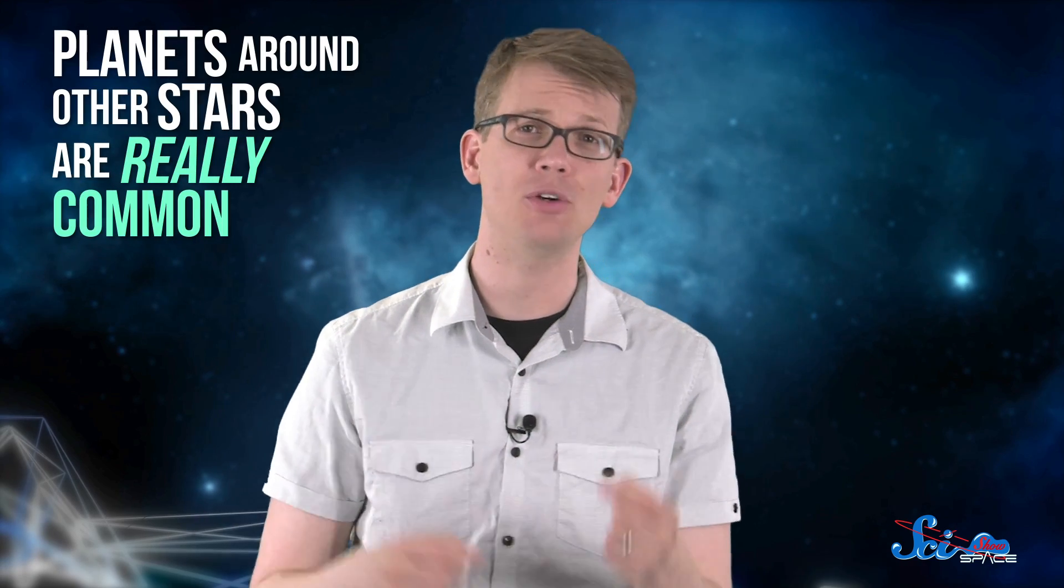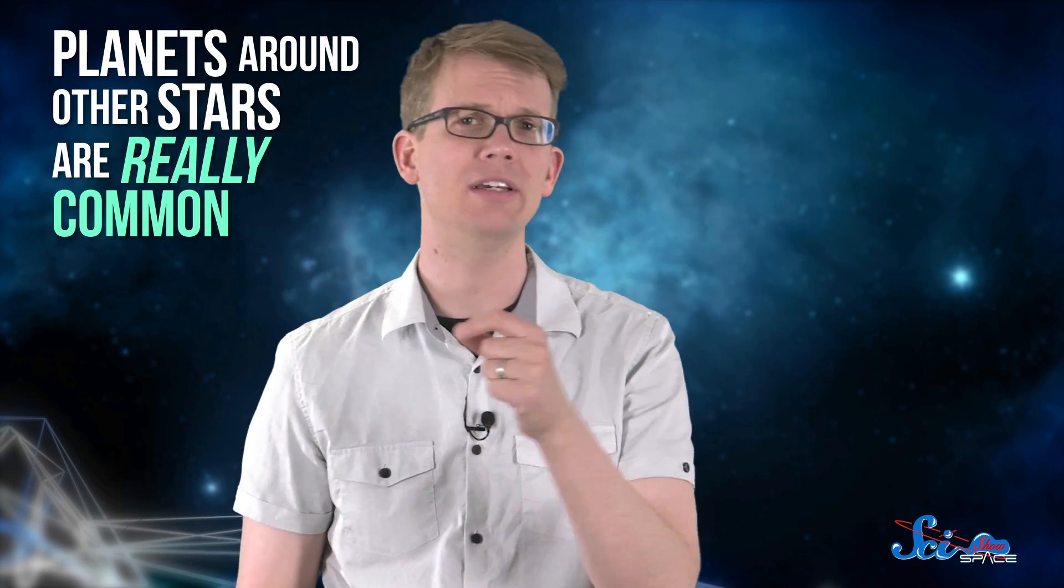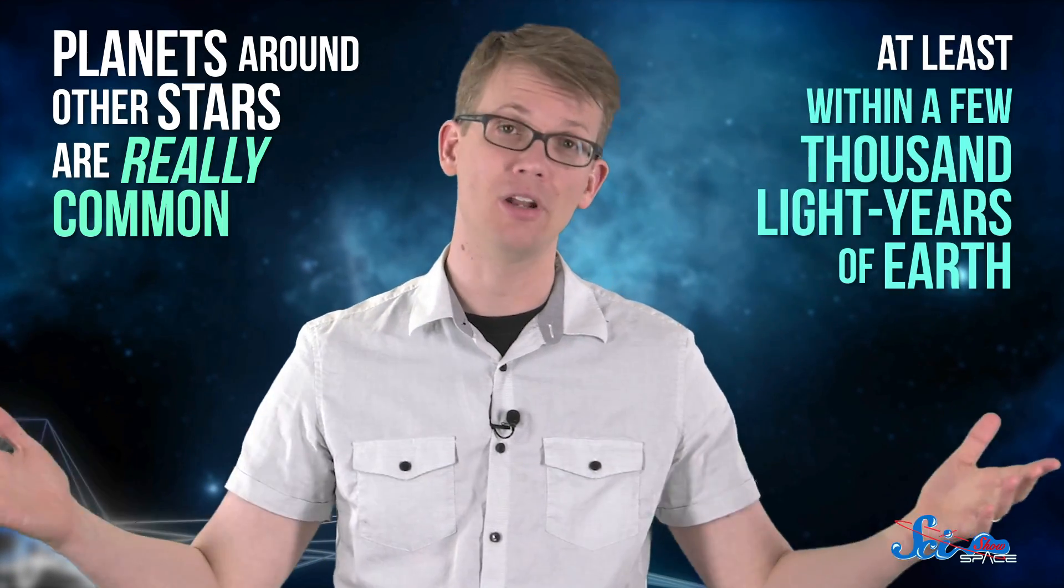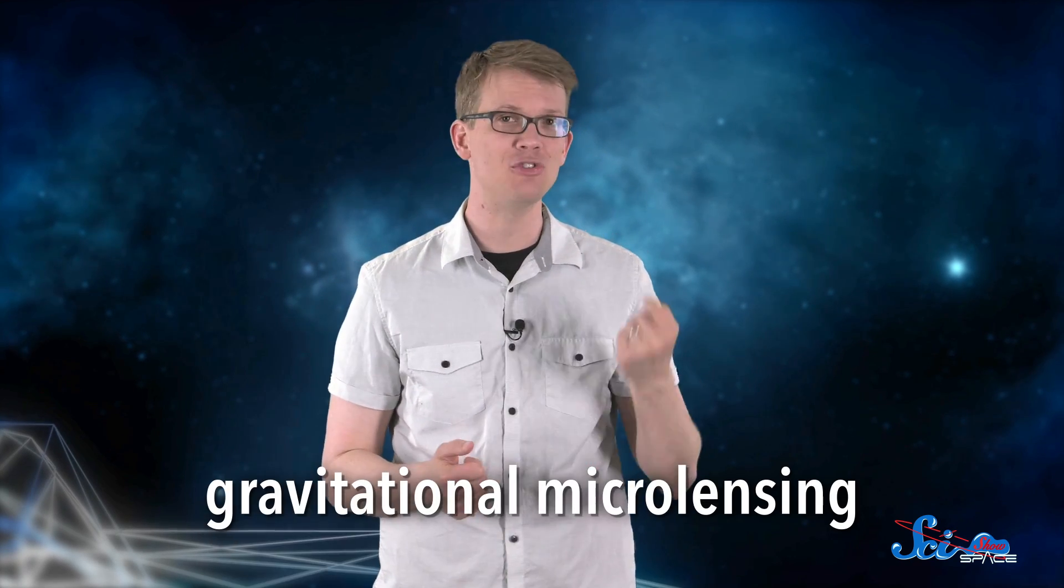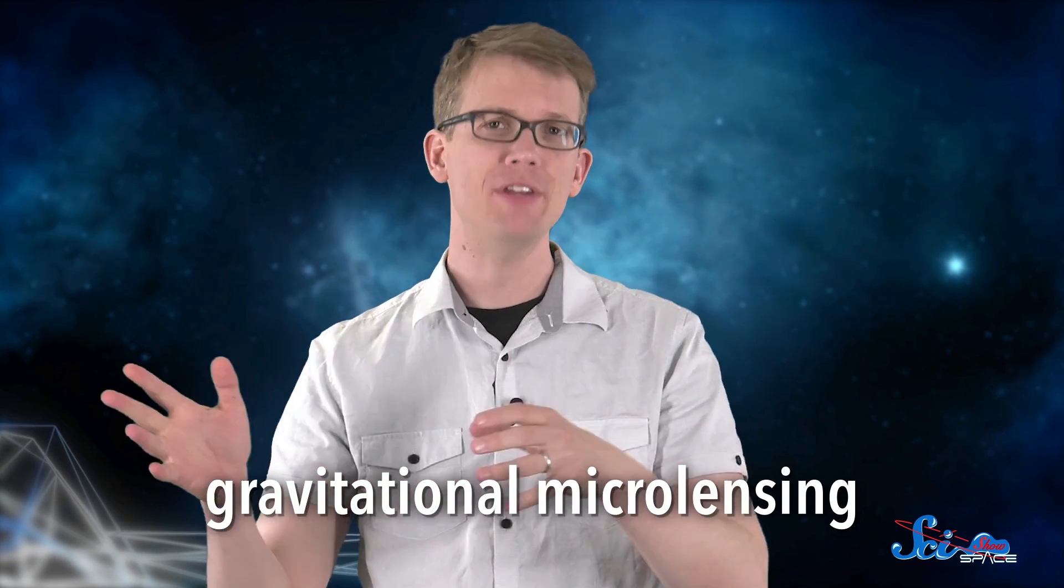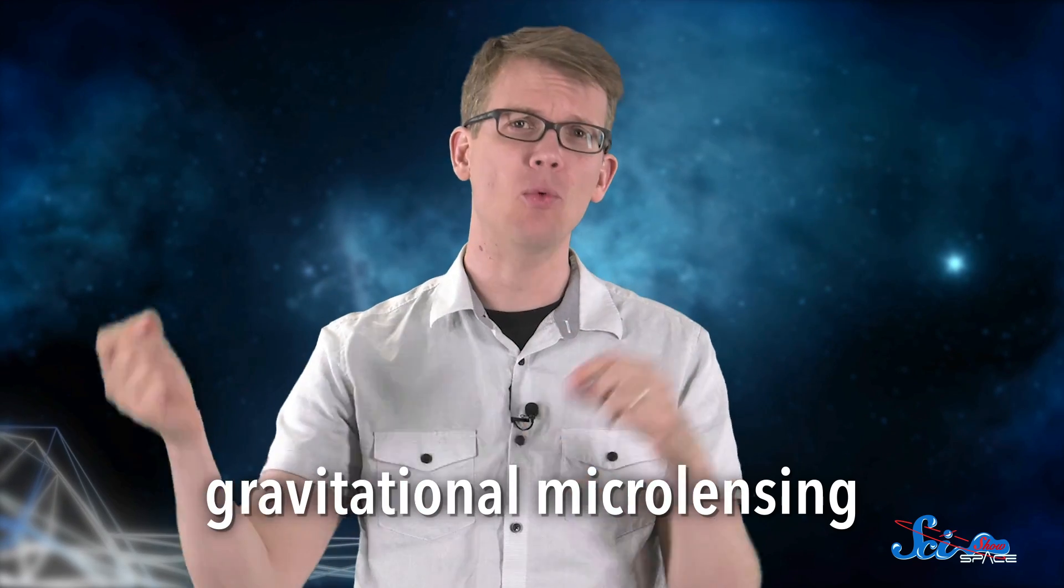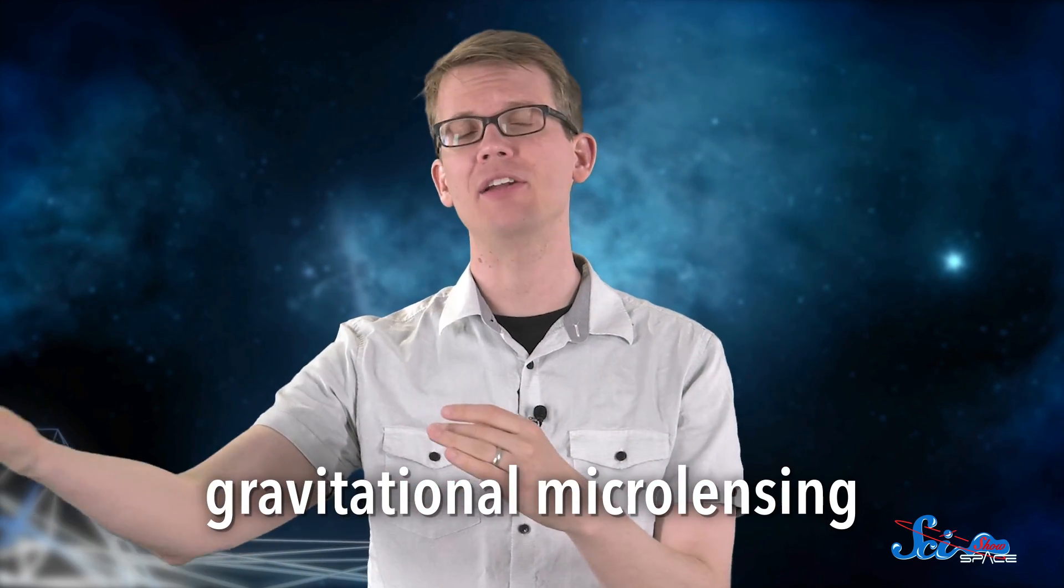Now, we've found so many exoplanets using the transit method that it's pretty clear that planets around other stars are really common, at least within a few thousand light-years of Earth. When it comes to finding planets that are around stars that are really far away, like tens of thousands of light-years, our best bet is to use gravitational microlensing. That's where the gravity from a star with a planet orbiting it warps the light we detect from a second star behind it. It doesn't let us see the planet, but it lets us know it's there.